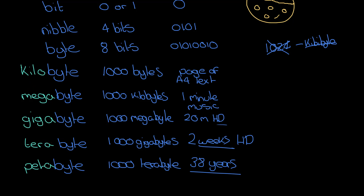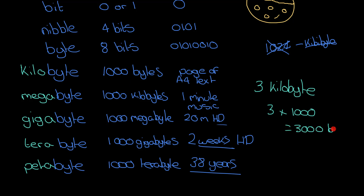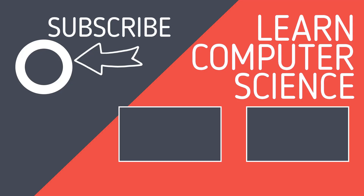So you've got kilobyte, megabyte, gigabyte, terabyte, and petabyte. The calculations are simple — for example, three kilobytes is three times one thousand bytes, which is three thousand bytes. You just need to remember it's a thousand each time and remember the order: a megabyte is a thousand kilobytes, a gigabyte is a thousand megabytes, and so on. If you found that video useful, please hit the like button and subscribe to the channel.